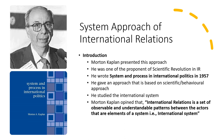Kaplan aligned with the behavioral approach and was of the view that we should abandon the traditional approach if we want our subject — political science or international relations — to survive. He wrote 'System and Process in International Politics' in 1957, giving an approach based on the scientific or behavioral method. He studied the international system and argued that international relations is a set of observable and understandable patterns between the actors that are elements of a system — the international system.